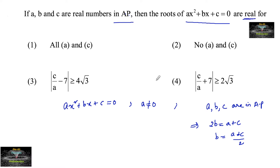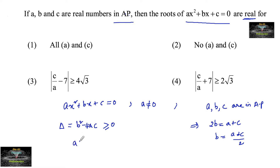Since the roots are real, we take the discriminant: B² minus 4AC is greater than or equal to 0. Substituting B as (A plus C) divided by 2, we get (A plus C)² divided by 4 minus 4AC is greater than or equal to 0.